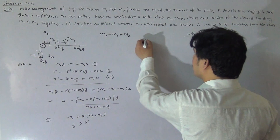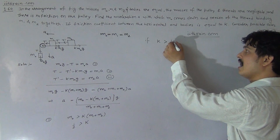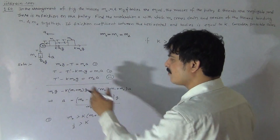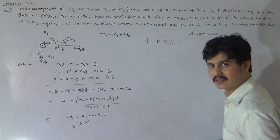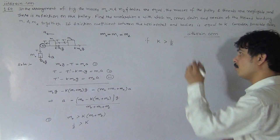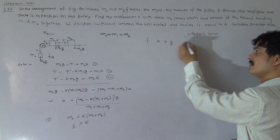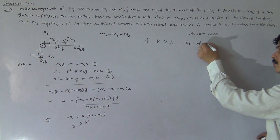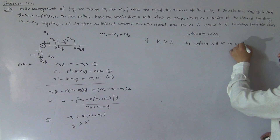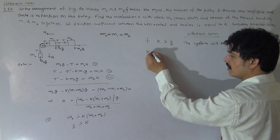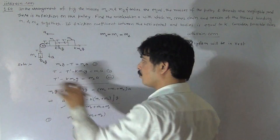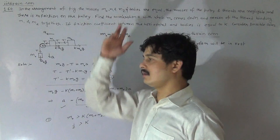If K is greater than one-half, the system will be at rest. If K is equal to one-half, the system will also remain at rest. If K is less than one-half, the system will move downward — M0 will descend and the horizontal blocks will slide.